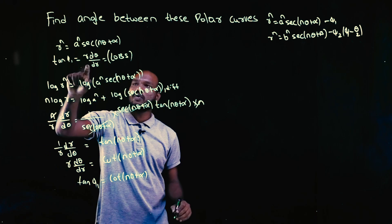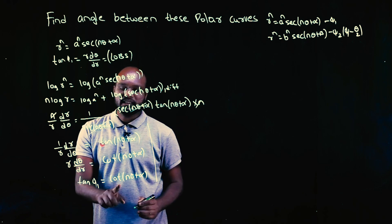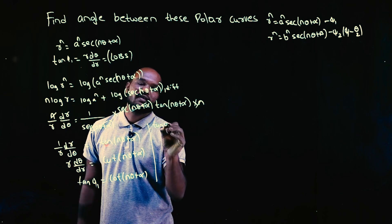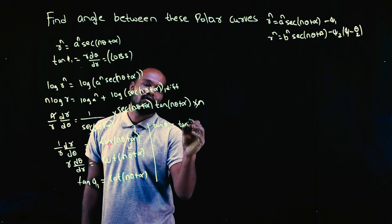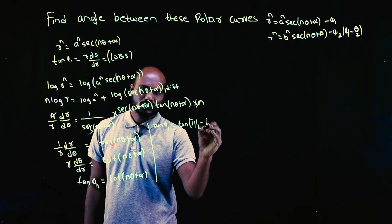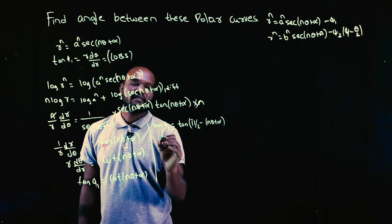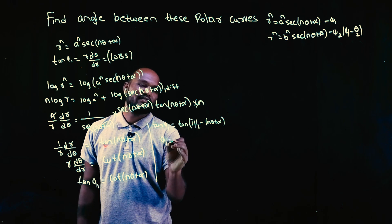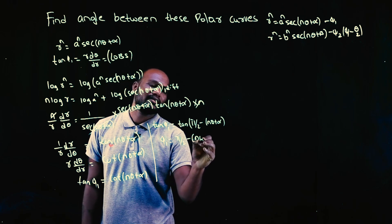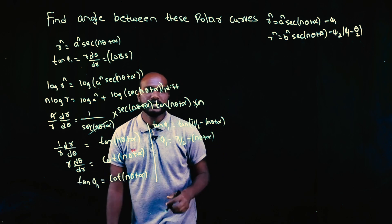Since tan φ₁ = r·(dθ/dr), we have tan φ₁ = cot(nθ+α). Writing this in terms of tan: tan φ₁ = tan(π/2 − (nθ+α)), so φ₁ = π/2 − nθ − α.